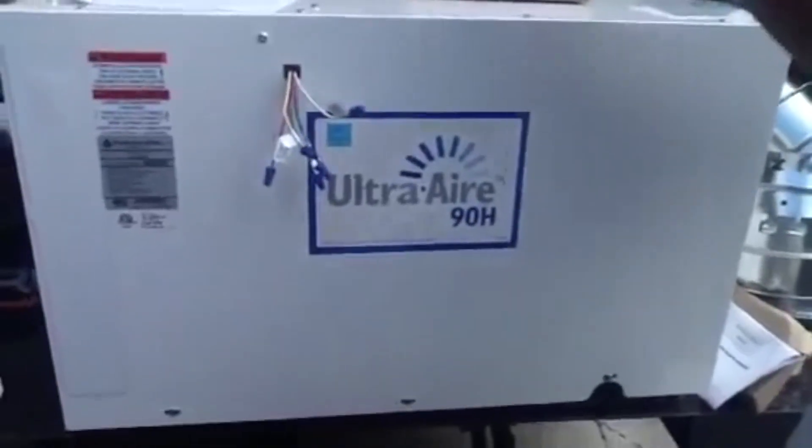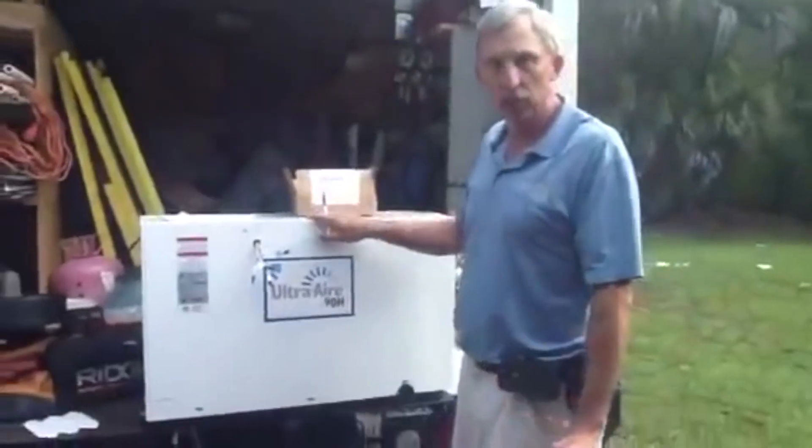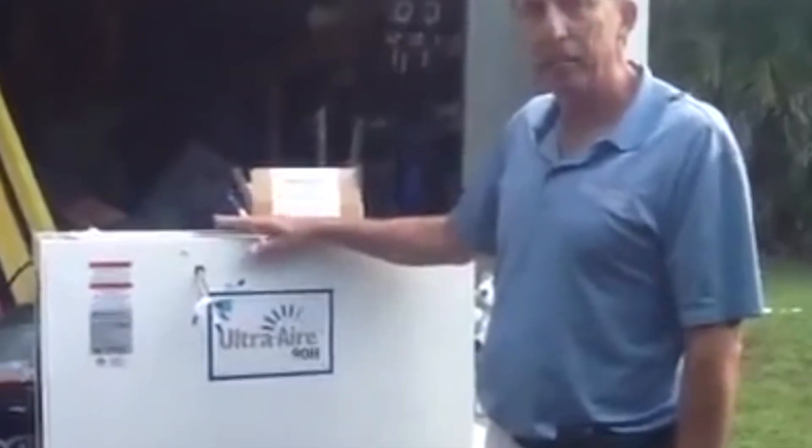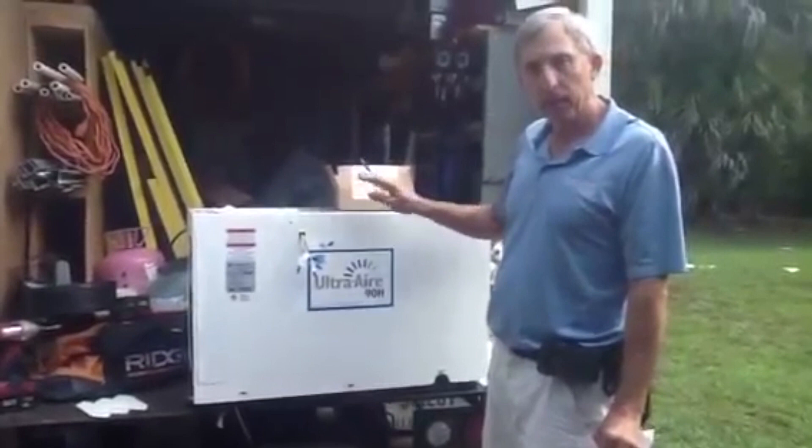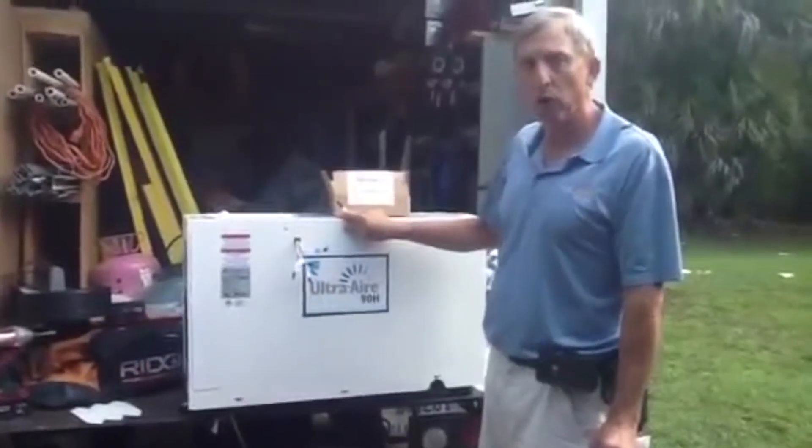Okay folks, today I want to talk to you about a whole house dehumidification system. For this particular customer, we're going to put a 90 pint Ultra Air dehumidifier. What that means, this thing is actually capable of pulling out 90 pints of water in a 24 hour period.